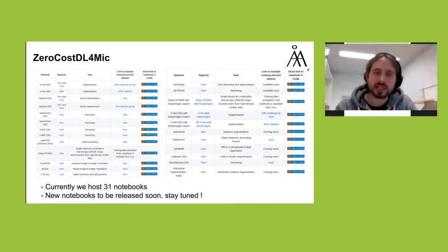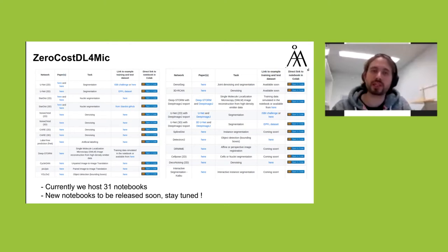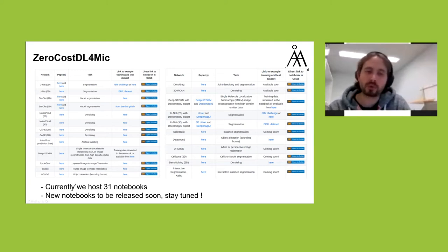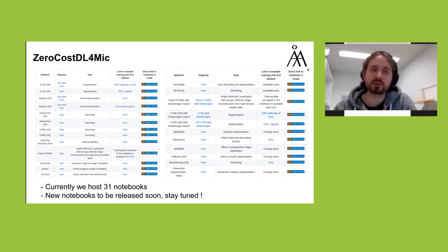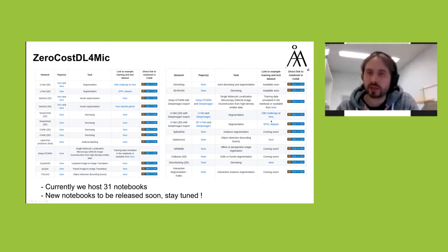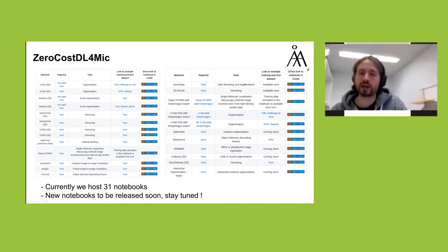Our wiki page is essentially a collection of Jupyter notebooks with dedicated applications. At the moment we have 31 notebooks, with new ones being released. These cover many different types of tasks: from segmentation to denoising to image-to-image translation, as well as notebooks for joint denoising and segmentation.